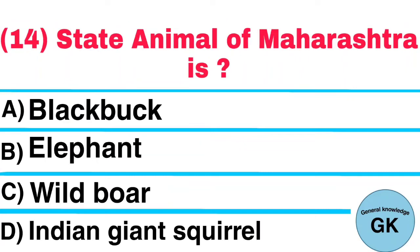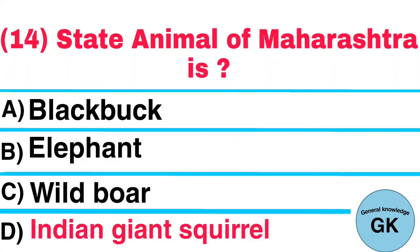Question Number 14. State Animal of Maharashtra is: A. Black Buck, B. Elephant, C. Wild Boar, D. Indian Giant Squirrel. Answer: Indian Giant Squirrel.